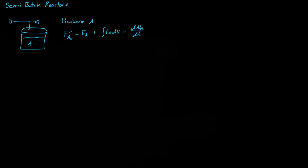We have no A coming into the system, so that's zero. We have no A leaving the system, so that's also zero. So what we end up with, after integrating, is R_A times the volume equals dNA over dt.